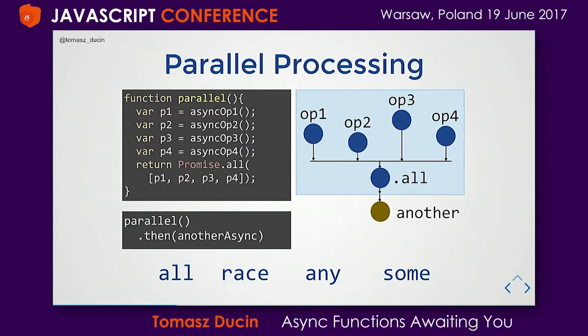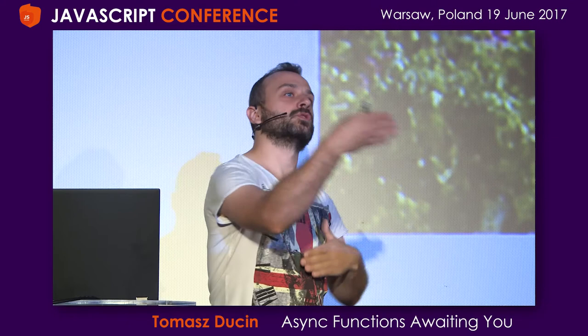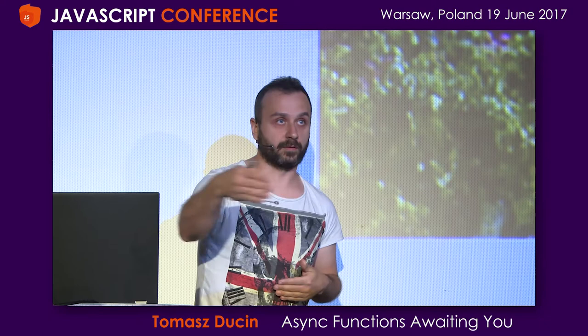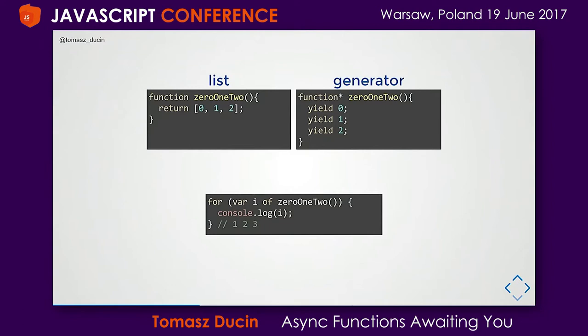Let's go further to the yield keyword. When driving a car and encountering a yield or stop sign, we give control to vehicles on the other side — and this is how generators work in JavaScript. On the left-hand side we have a function that returns an array; on the right-hand side we have a generator with the asterisk and the yield keyword. Yield is similar to return, but return terminates the function while yield gives away one item at a time.